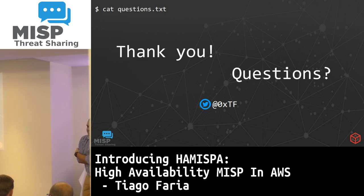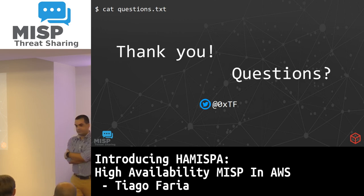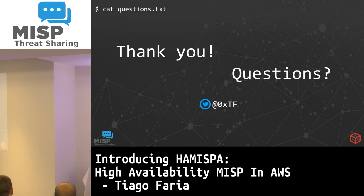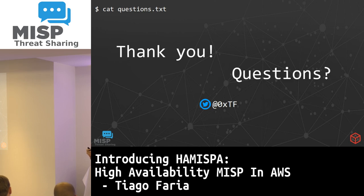Question from Andres: was there any situation where you felt you had to work against MISP to make this work — any blocker? The answer is not necessarily. MISP itself wasn't complicated — this is basically the same approach you'd take for any high availability application on AWS. There were a few situations where I was getting a lot of blackhole requests, which is where I pinged on Gitter. Now that this is out and I'll put everything on GitHub, I'll talk with the team because there are definitely things we could work on there.